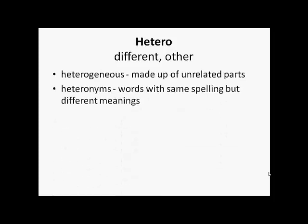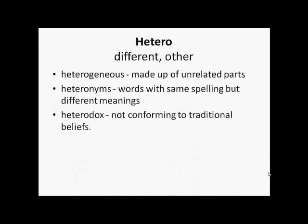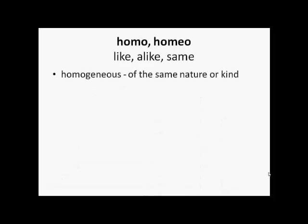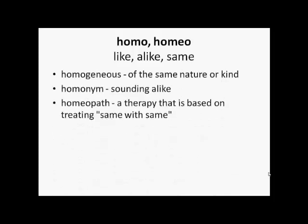'Hetero' means different or other. So heterogeneous means made up of unrelated parts. Heteronyms are words having the same spelling but different meanings. And heterodox means not conforming to traditional beliefs. 'Homo' or 'homeo' means alike or the same — so homogenous means of the same nature or kind. Homonym means sounding alike. Homeopath is a therapy that is based on treating the same with the same.